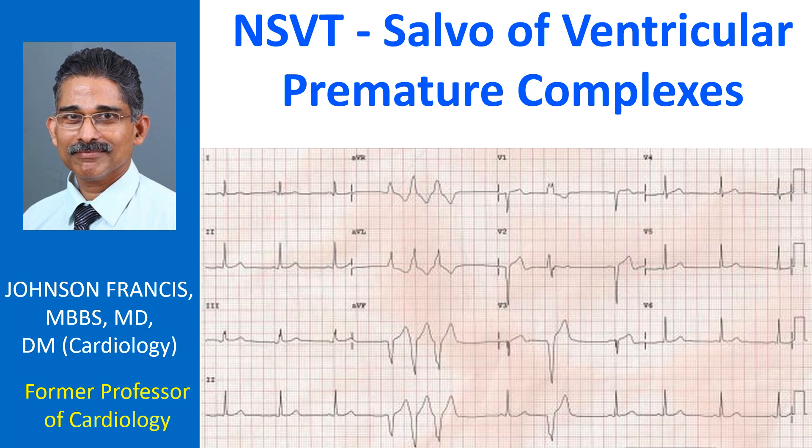There is a salvo of three wide QRS complexes in AVR, AVL, and AVF. The original meaning of the word salvo is a series of shots fired in rapid sequence from a gun, or simultaneously from multiple guns. Here, the wide QRS complexes occur at a rapid rate nearing 150 per minute.